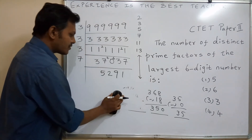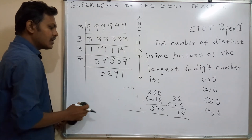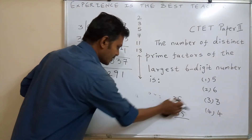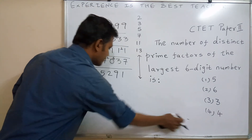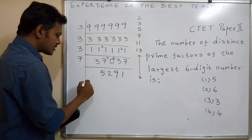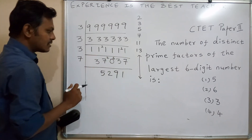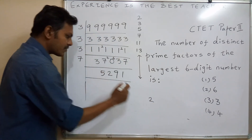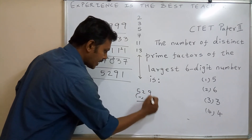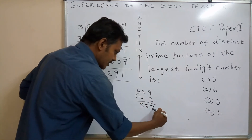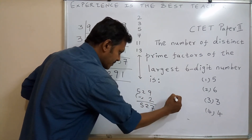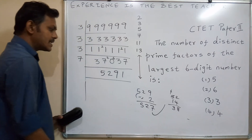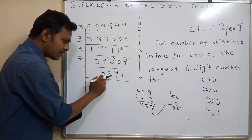We now check 5,291 for divisibility by 7. There is no need to recheck divisibility by 3 since 37,037 was already not divisible by 3. Applying the rule: twice the last digit of 5,291 is 2; subtracting from 529 gives 527. Then twice 7 is 14; subtracting from 52 gives 38. Since 38 is not divisible by 7, the number 5,291 is not divisible by 7. We move to the next prime, 11.